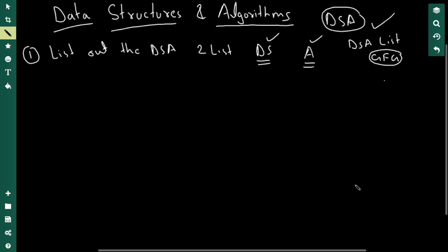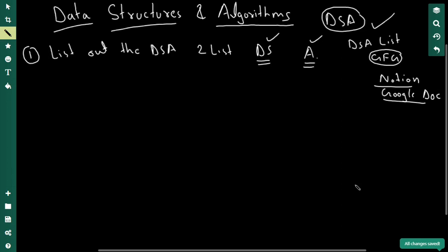For note making — and I'm a firm believer in note making — I'll suggest two free online note-making tools: one is Notion and another is Google Doc. Use either one of these to make your notes. Create your two lists, one of data structures and one of algorithms, and for finding the DSA list, do a Google search or go on Geeks for Geeks.